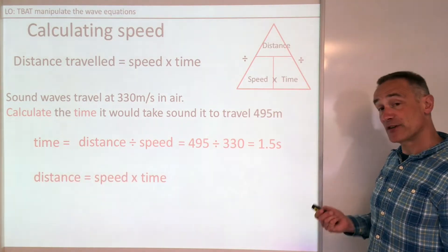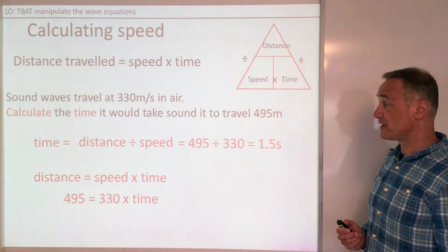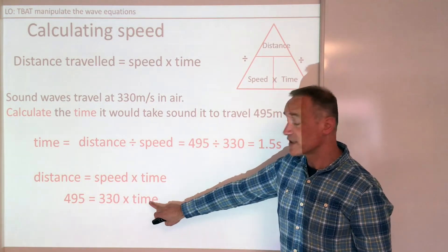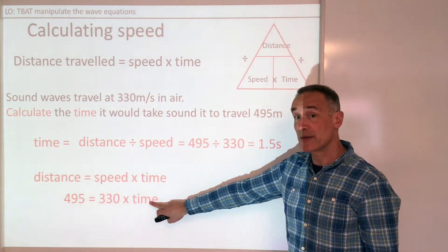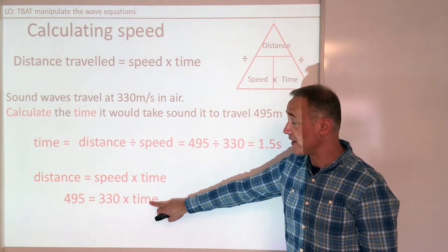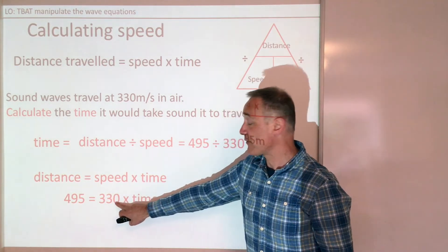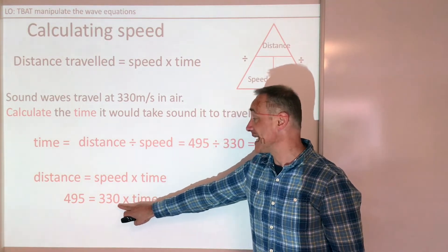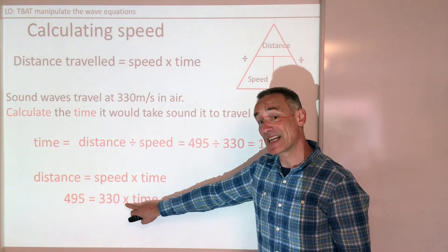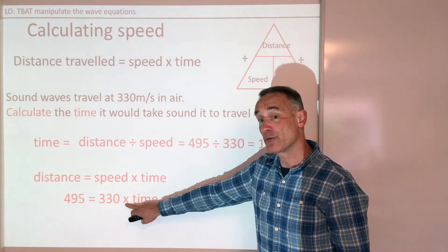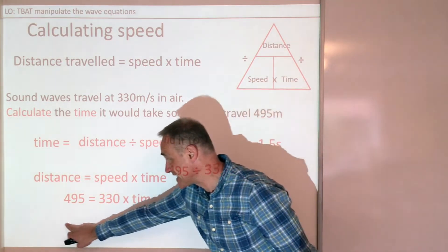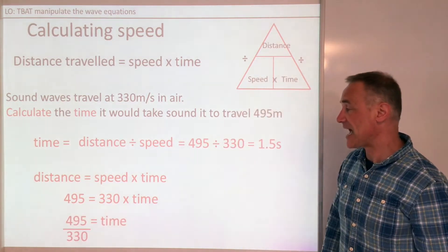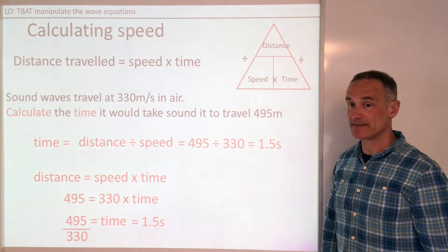You can do it the other way by quoting the equation first and putting your values in. We want time to be the subject of the equation, so we need to get 330 to the other side. It's multiplying, so we do the exact opposite, which is divide, and take it down to the other side, and we get exactly the same answer.